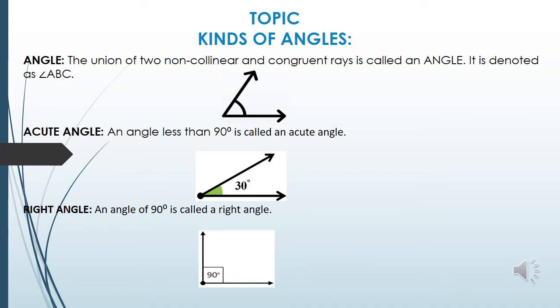We are going to study the topic 'kinds of angles'. An angle is the union of two non-collinear and concurrent rays. It is denoted as angle ABC.